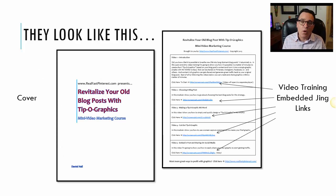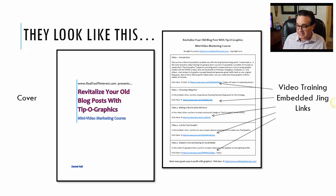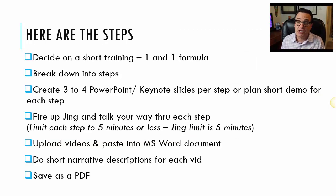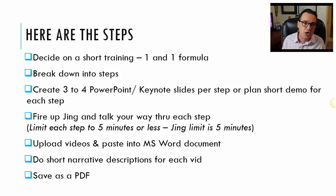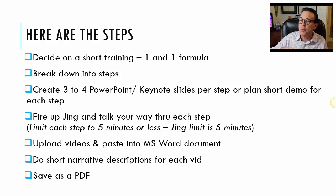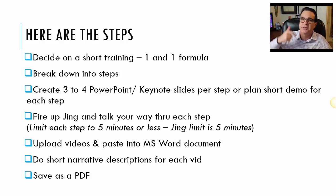This is what one of the mini courses actually looks like — it's basically just a two-page PDF document with embedded videos on it. These are video trainings with embedded Jing links. Here are the steps to create one: first, decide on a short training using the one-and-one formula. Then break down your steps. You have a solution, and that solution usually requires some sort of process — you do this first, you do this second, you do this third, and you get the result you're after.